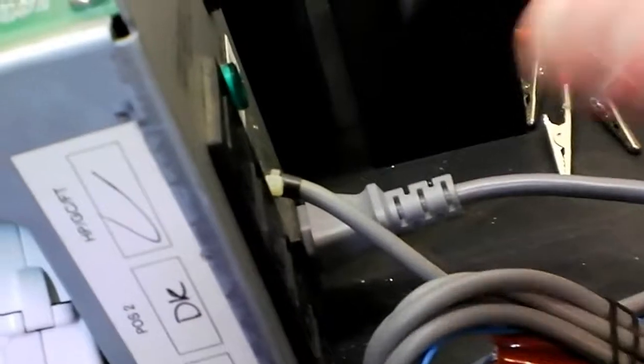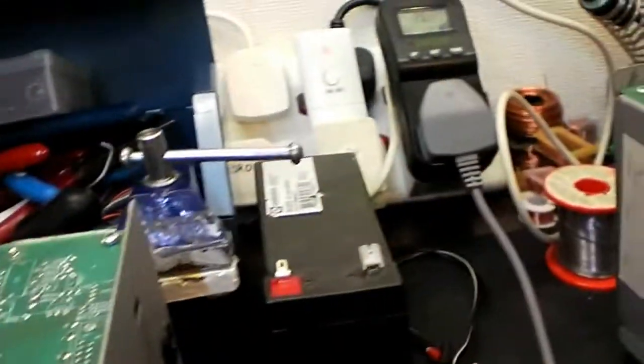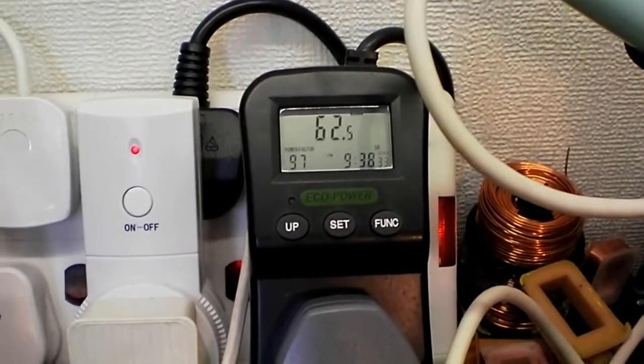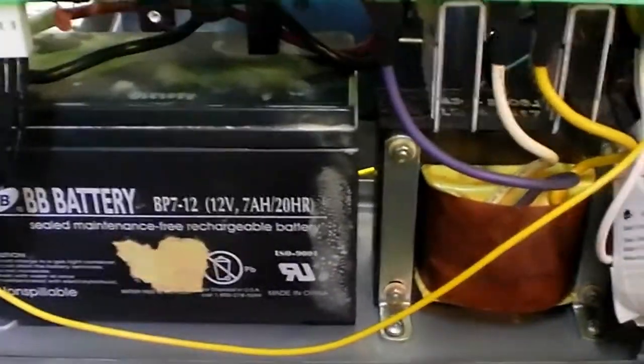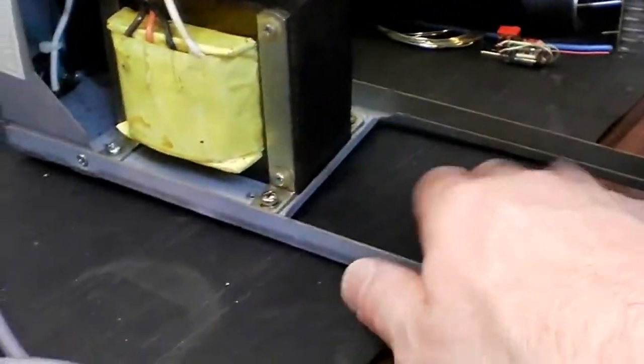Of course, if you plug in a load, let's plug in a 60 watt light bulb. Jumps to 62 watts. So the quiescent current of this UPS is very low indeed. We'll compare that later on to this other one. I need to pop the battery back in.